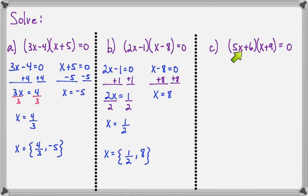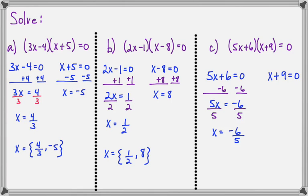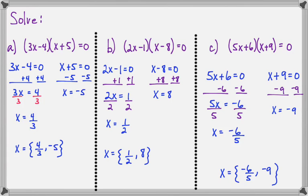For our third equation, we have (5X plus 6) times (X plus 9) equals zero. One of our parentheses must be zero. If 5X plus 6 is zero, we subtract 6 from both sides to get 5X equals negative 6, then divide both sides by 5 to get X equals negative 6 over 5. For X plus 9 equals zero, we subtract 9 from both sides to get X equals negative 9. Our two solutions are negative 6 over 5 and negative 9.